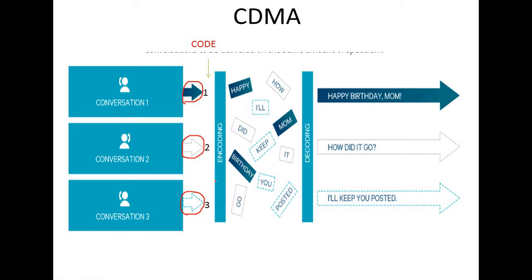Now we have an encoder — what the encoder and decoder are is a different concept. If you are not getting it, you can write in the comment section and I will explain encoding and decoding techniques. Conversation 1 sends the information — for example, 'happy birthday mom' — these three messages from conversation 1 will be scrambled and transmitted with code 1.